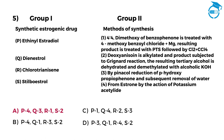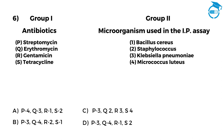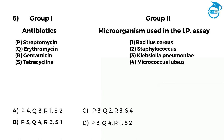Few more questions left, let's move ahead and take the challenge. Group 1: Antibiotics. Group 2: Microorganism used in the IP assay. P, Streptomycin — 1, Bacillus series. Q, Erythromycin — 2, Staphylococcus. R, Gentamicin — 3, Klebsiella pneumoniae. S, Tetracycline — 4, Micrococcus luteus. Options: A: P4, Q3, R1, S2. B: P3, Q4, R2, S1. C: P3, Q2, R3, S4. D: P3, Q4, R1, S2. The right option is B, that is P3, Q4, R2, S1.